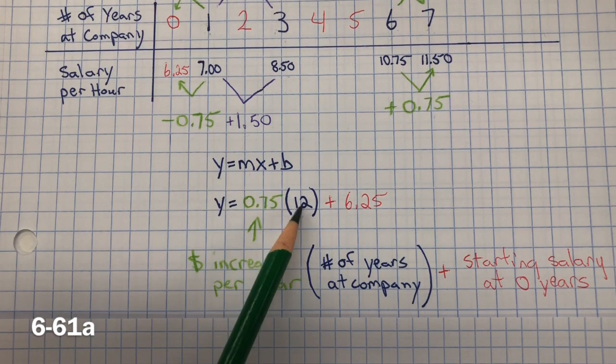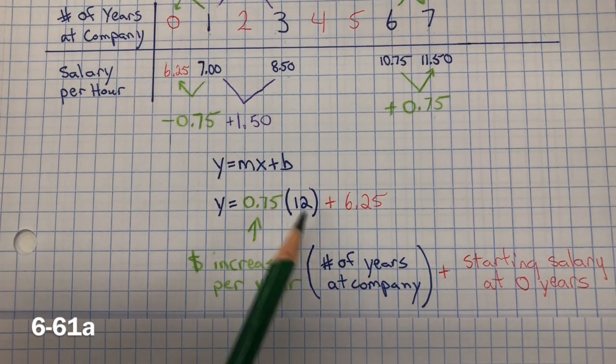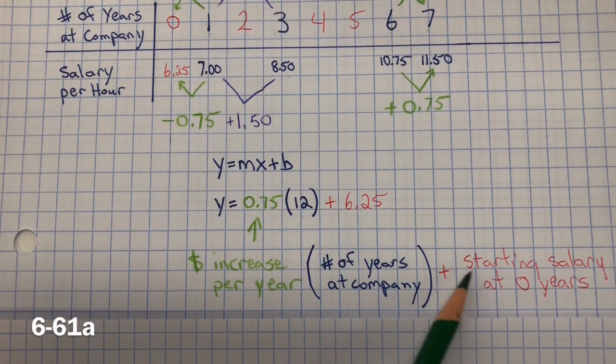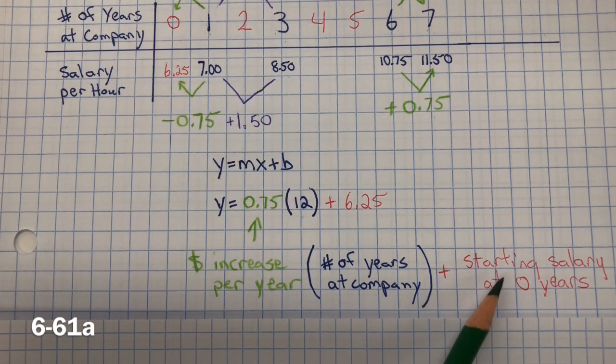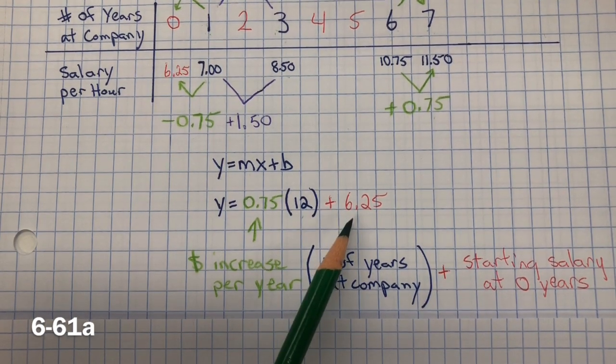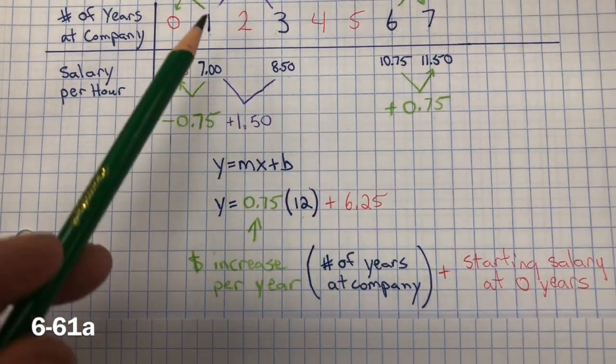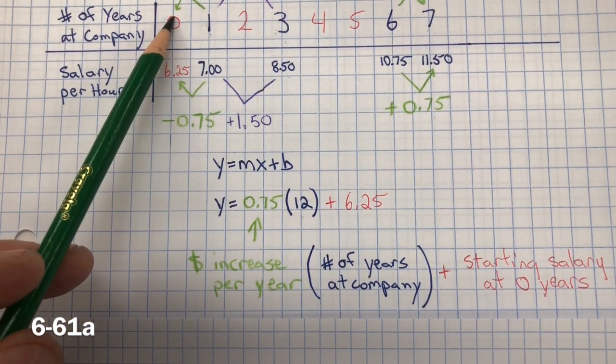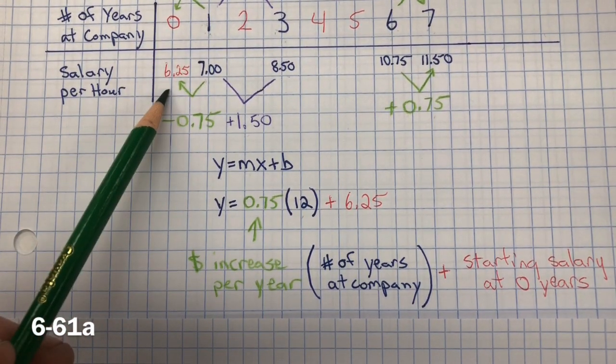12 or x represents the number of years at the company. That's what we wanted to find out. And the starting salary for zero years, when he first started the company. The way I found that is I just subtracted one year to get to zero and subtracted 75 cents.